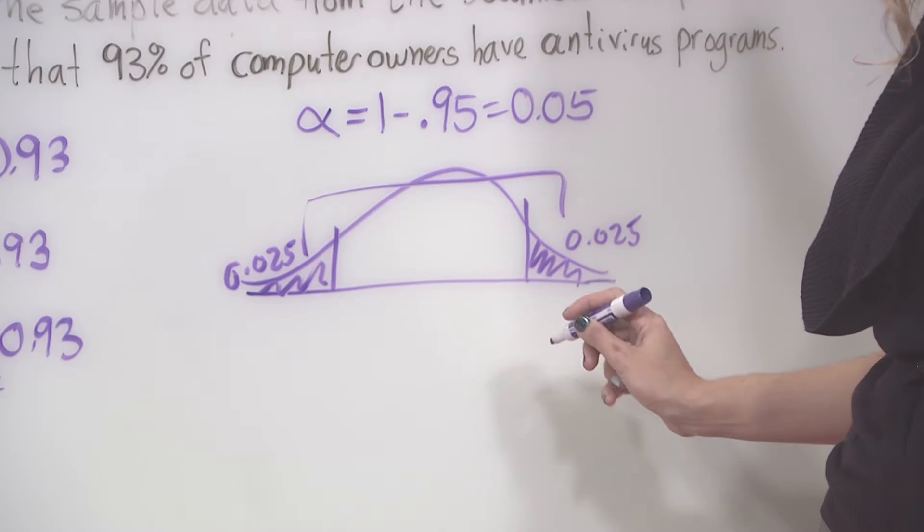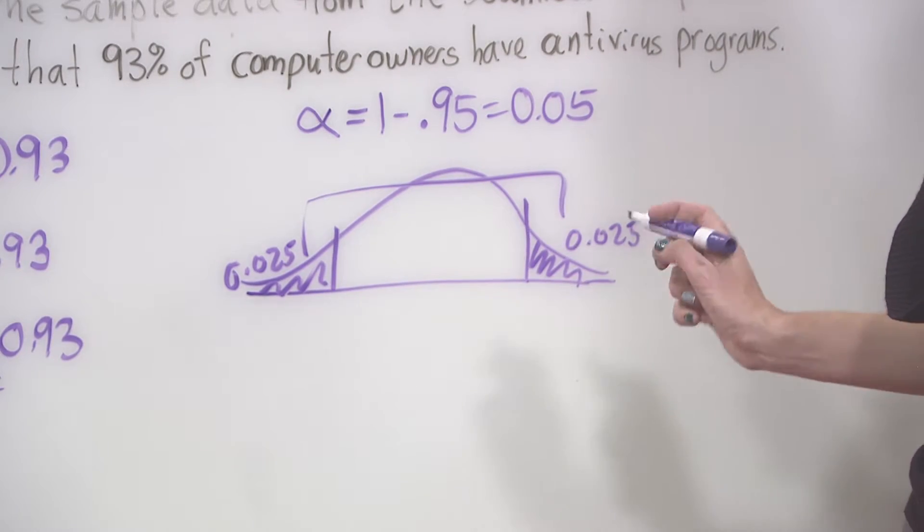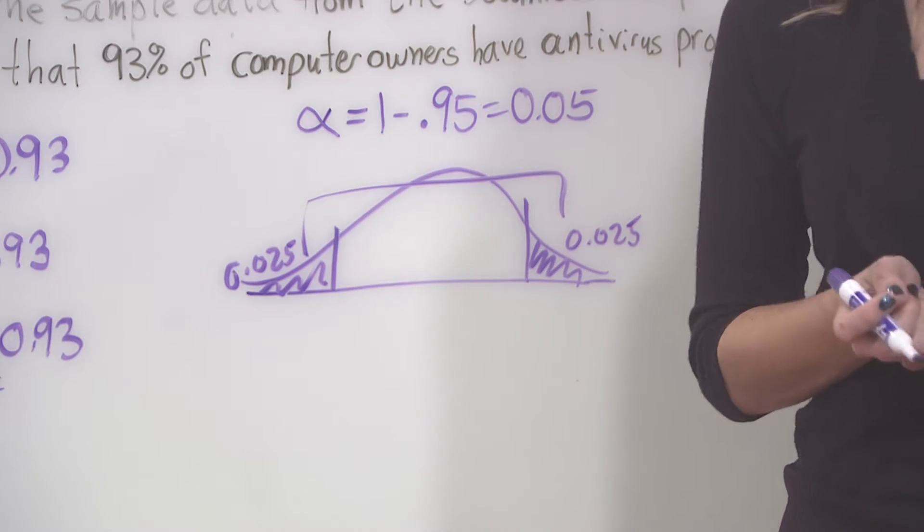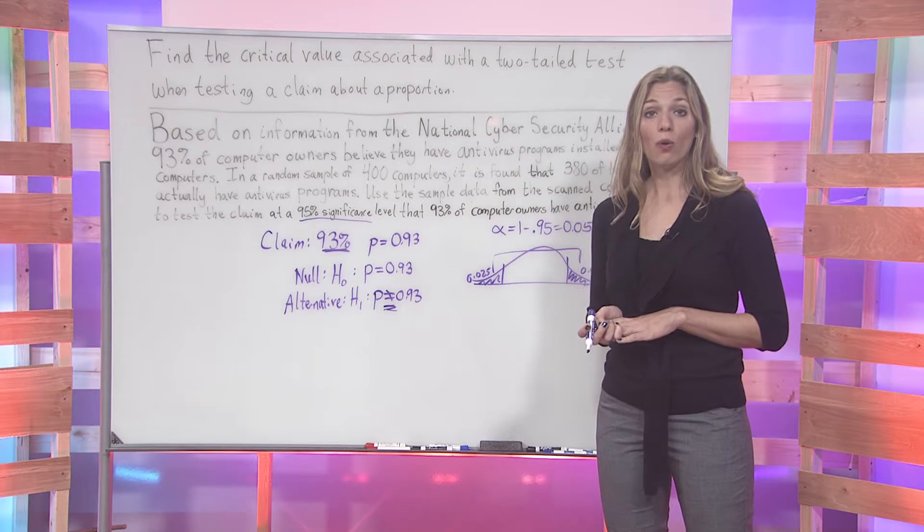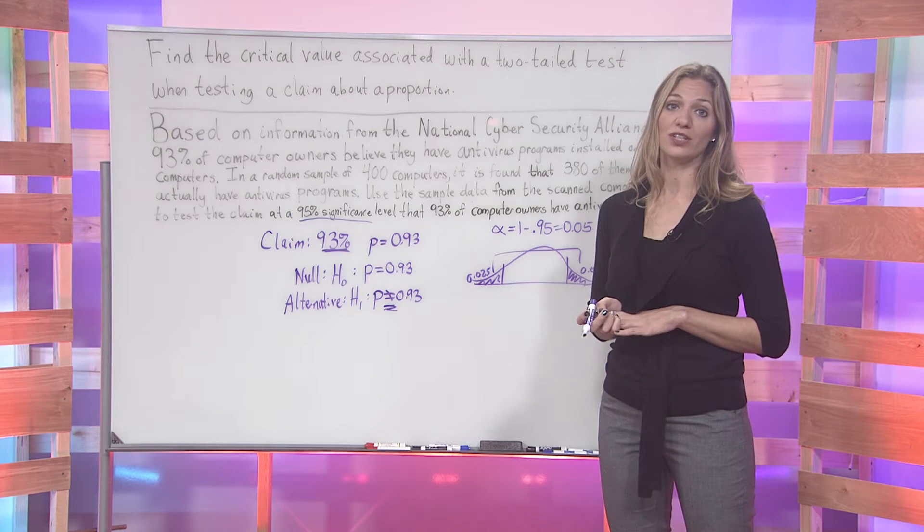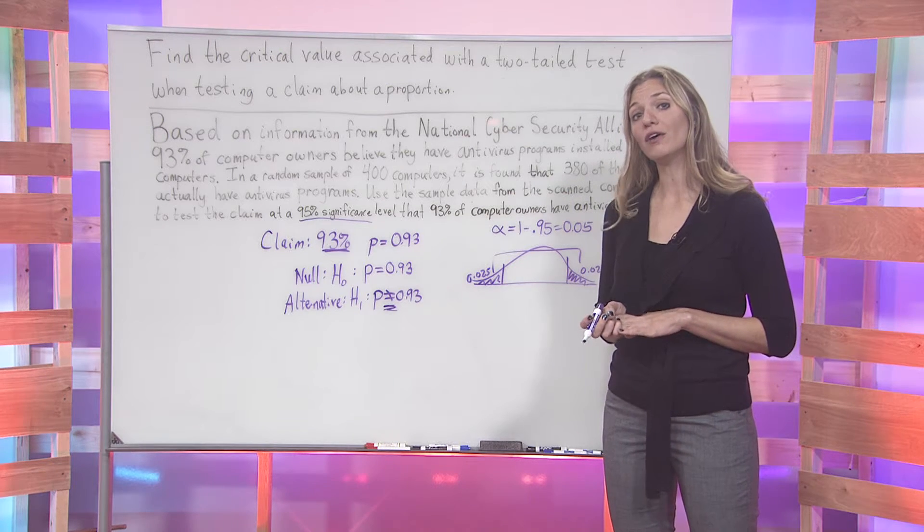Now, from here, we want to find the critical value that's associated. We can do this either from our chart or from the calculator. If you are using your TI-83 or 84 calculator, please refer to the proper calculator videos.